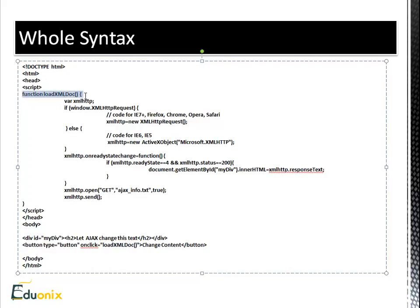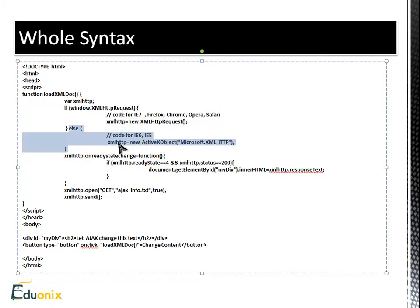The first thing we're doing is creating an empty variable called xmlHttp. Next is the code where we check the condition for what we should do depending on which browser we're using — pretty much all browsers except IE6 and earlier use this method to create the object; if it's IE6 or IE5, we use ActiveX. There aren't many people running IE6 in 2013, so this else part isn't mandatory, but it's good to have. Then we take the object, set onReadyStateChange to a function, and check that readyState equals 4 and status equals 200.